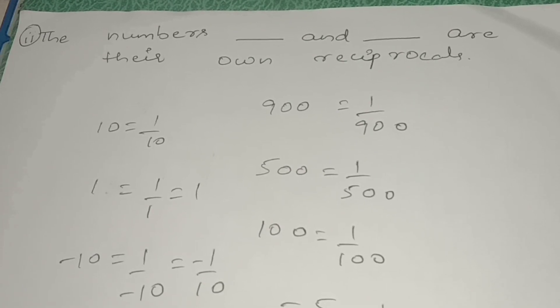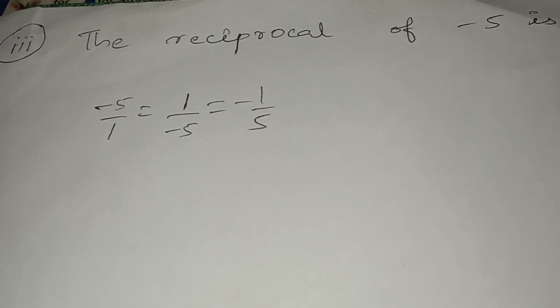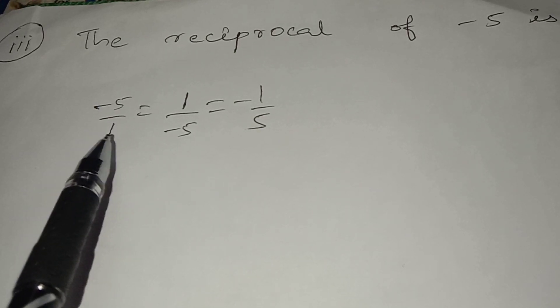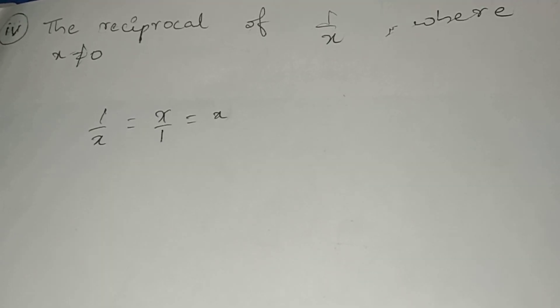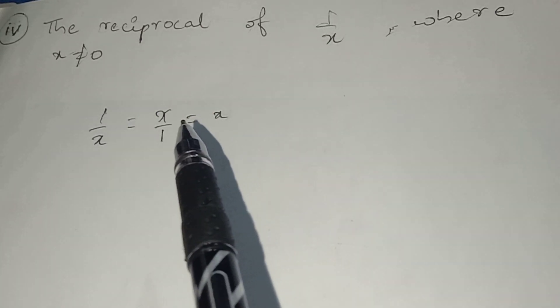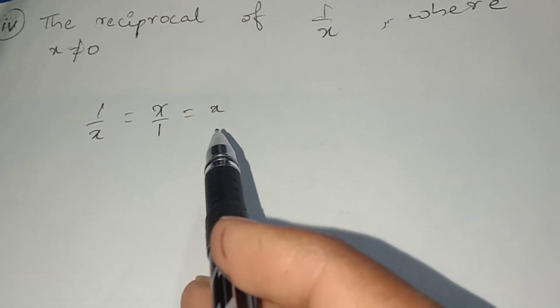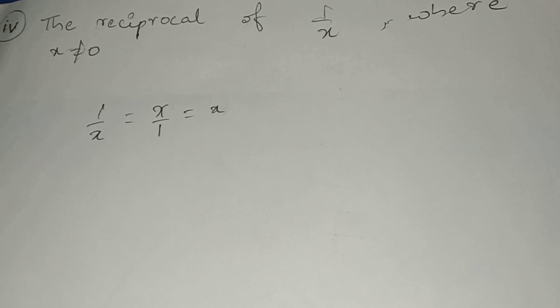If a rational number's denominator is not given, it is considered as 1. So minus 5 by 1 becomes 1 by minus 5 when reciprocal is taken - the numerator goes to denominator and denominator comes to numerator - giving minus 1 by 5. The reciprocal of 1 by x, where x is not equal to 0, becomes x by 1, which equals x. So the reciprocal of 1 by x is x.